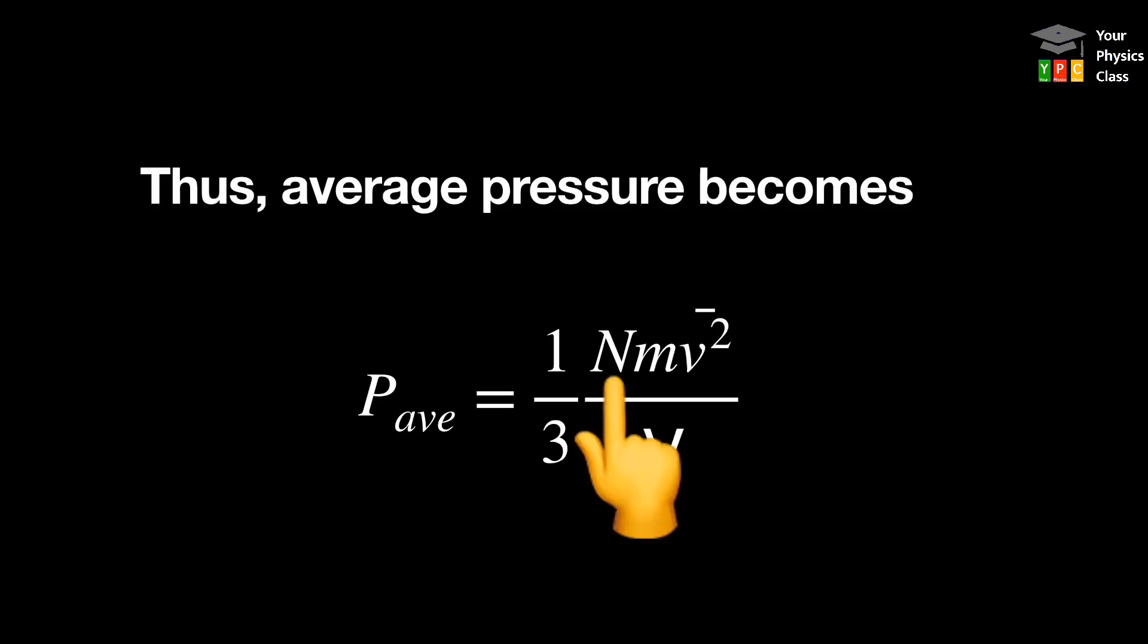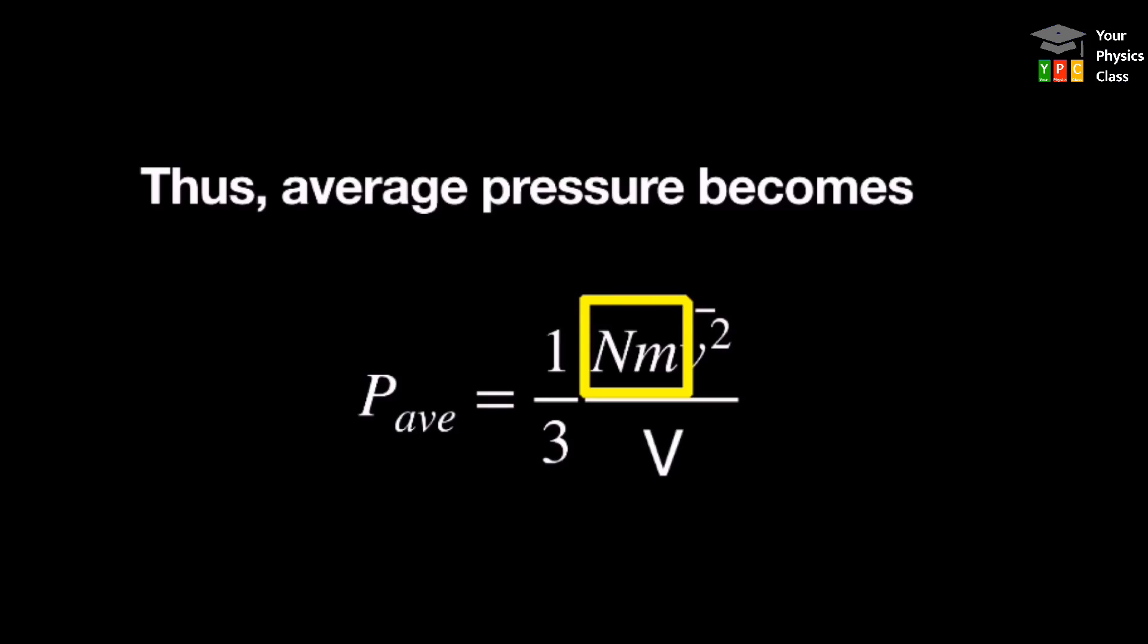Yahan n number of molecules hai aur small m mass of one molecule hai to nm ka matlab total mass of gas hota hai and V is volume. So ye density ban jata hai. So one by three into density into average square velocity. Aisa bhi hum likh sakte hai.